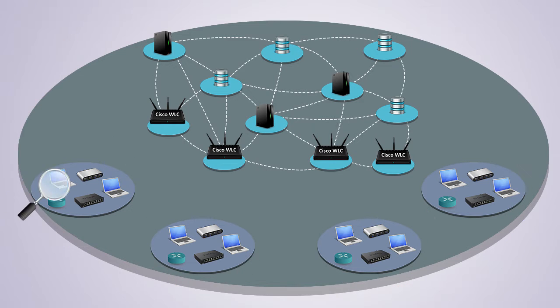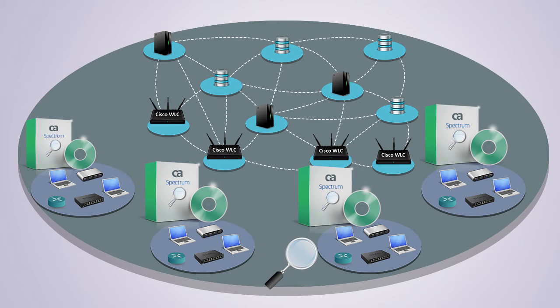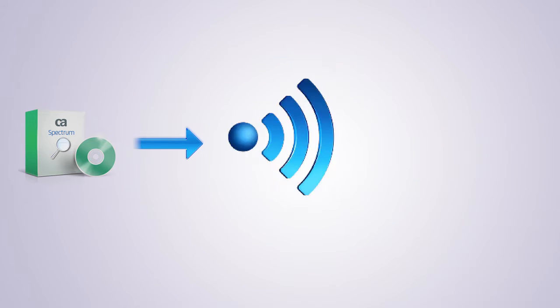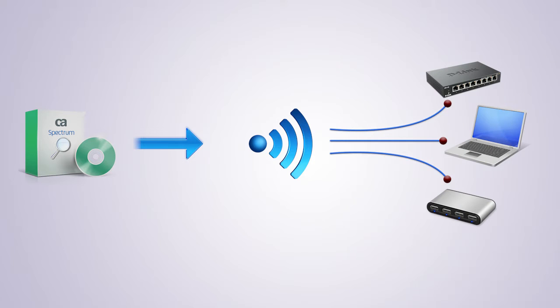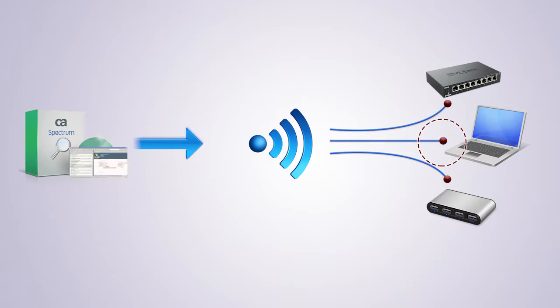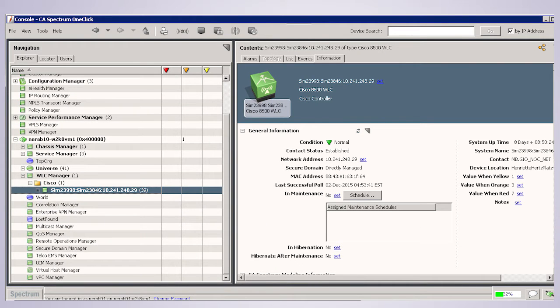However, to monitor the access points and controller, CA Spectrum needs to be connected with each of them. The administrators of Vunaire Airlines are glad to know that CA Spectrum 10.1 will support monitoring Cisco Wireless LAN Controllers. This will avoid connecting CA Spectrum with each access point. All the access points connected with the wireless controllers can be discovered and modeled in CA Spectrum.